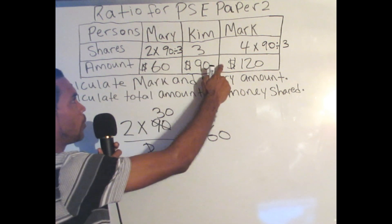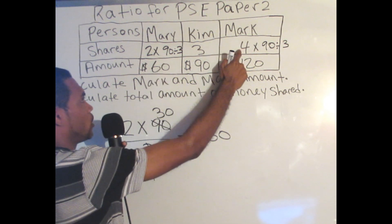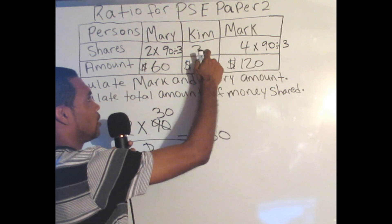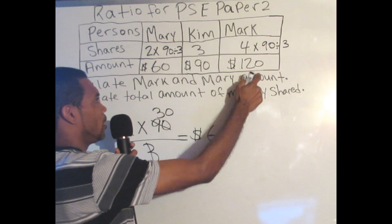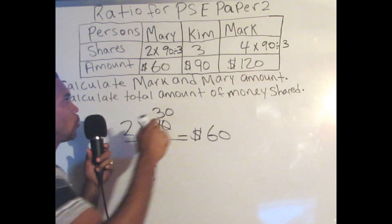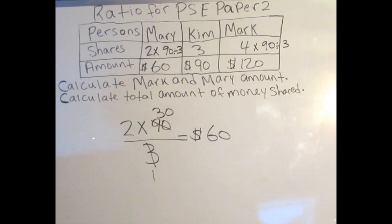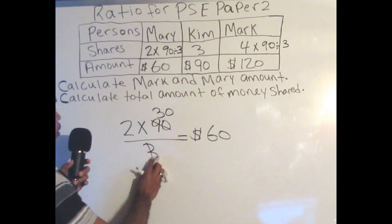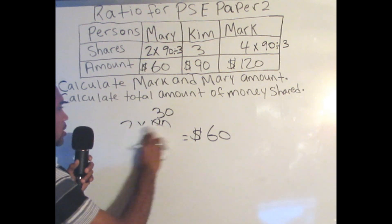For Mark, his ratio was 4, so 4 times 90 divided by 3 gives us $120 for Mark. And question A is now solved.